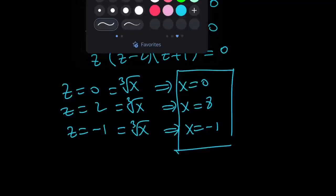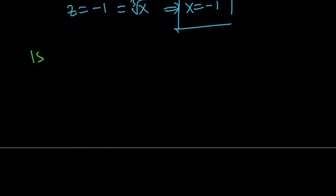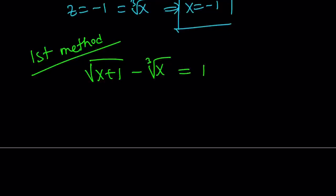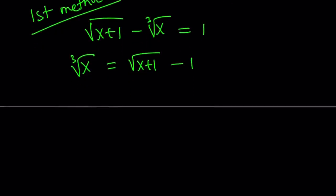So I'm going to talk about the first method next — because we talked about the second method first. Let me go ahead and rewrite the original problem. So instead of isolating the square root, this time I'm going to do something crazy and isolate the cube root. The cube root of x can be written as square root of x plus 1 minus 1. And then I'm going to cube both sides. So if you cube both sides, you're going to have the cube of a difference.